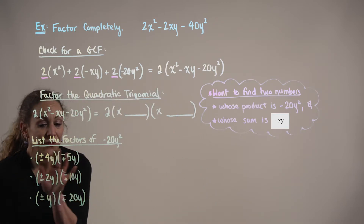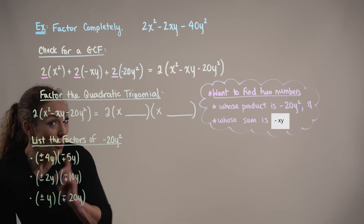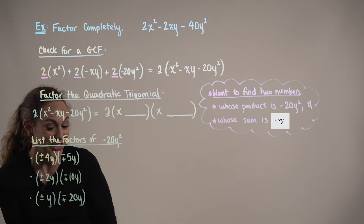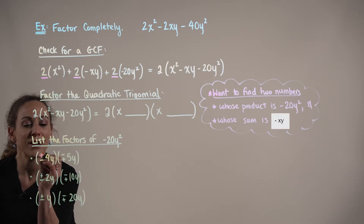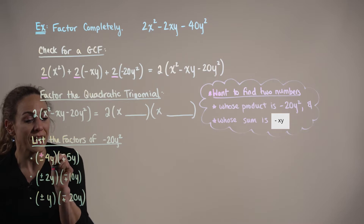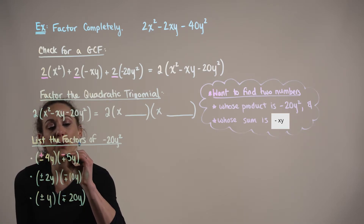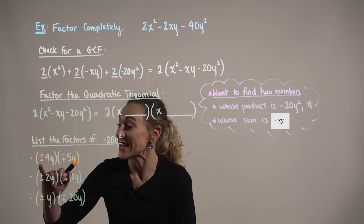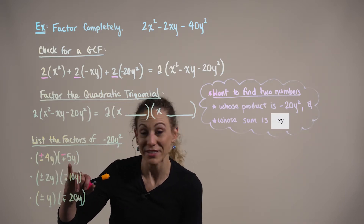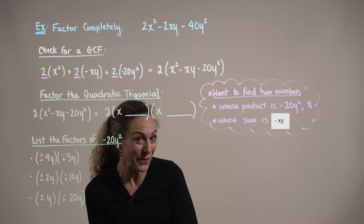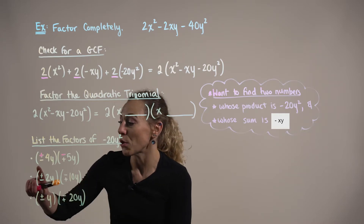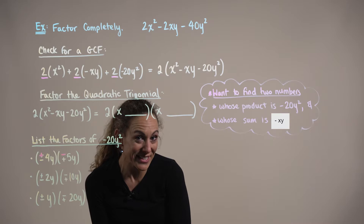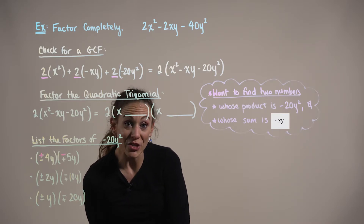In this first set, while it looks like we're listing one product or one set of factors, we actually have two distinct sets of factors here. Notice how when 4y is positive, we have a corresponding negative 5y, and when 4y is negative, then the corresponding factor 5y is going to be positive. This holds true for each of these cases, so we actually have six distinct sets of factors here that we need to check.